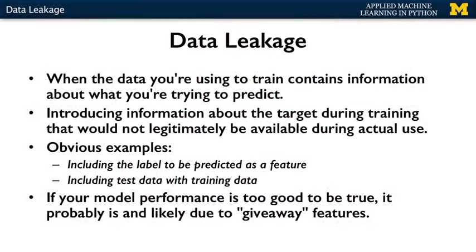When data leakage does occur, it typically causes results during your model development phase that are too optimistic, followed by the nasty surprise of disappointing results after the prediction model is actually deployed and evaluated on new data. In other words, leakage can cause your system to learn a suboptimal model that does much worse in actual deployment than a model developed in a leak-free setting. So leakage can have dramatic implications in the real world, ranging from the financial cost of making a bad monetary and engineering investment to system failures that hurt customers' perception of your system's quality or impact the company's brand.